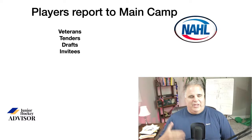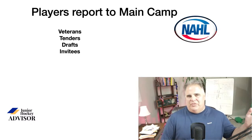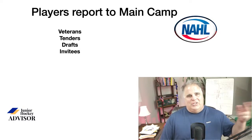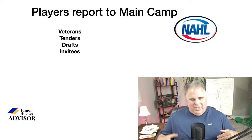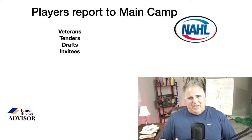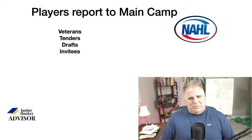So who reports to main camp? Veterans, tenders, draftees, and invitees. The invitees category can be very broad. Invitees can be players not invited back from other teams — released by their previous club — who show up at another main camp to try to make a team. An invitee could also be a kid who emailed the program; as general manager you get an email saying 'I'd like to try out for your team' and you let him register for camp. Just like the USHL, there's usually some local influence where the local midget team gets players into main camp. It's not uncommon to see U15, U16, U17, and U18 age players skating in a main camp to round out the rosters.